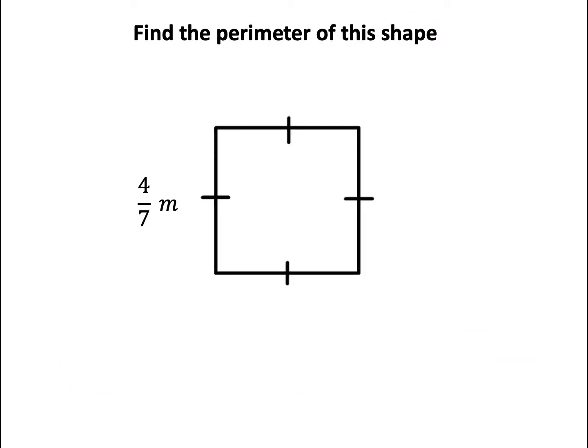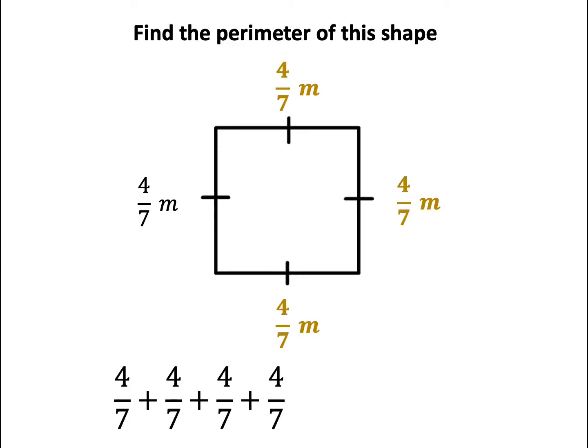Have a think about this question. We need to find the perimeter, but we're not given all the lengths. The name of the shape is a square. The dashes tell us what lengths are the same, so all four lengths are 4 out of 7 centimetres. Adding these four fractions together, we get 16 out of 7. Changing this into a mixed fraction, we get 2 and 2 out of 7 metres.